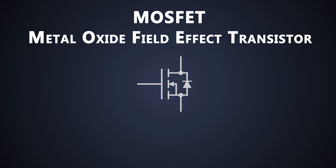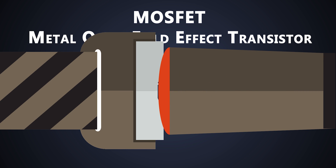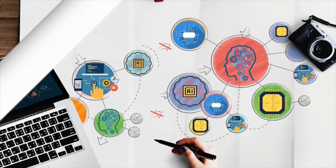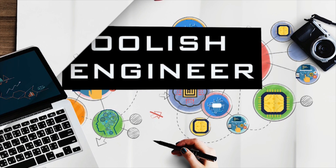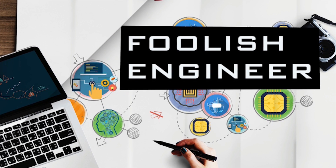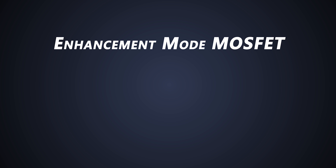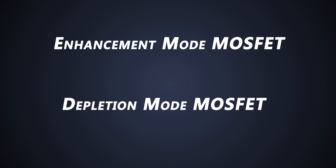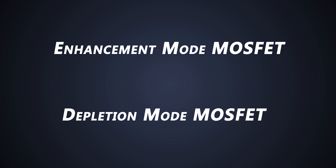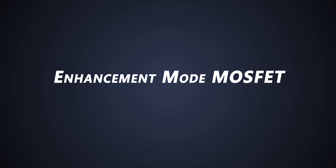This time we will look into the basics of MOSFETs and also see how it is different from BJT. There are two types of MOSFETs: Enhancement Mode MOSFETs and Depletion Mode MOSFETs. We mostly use Enhancement Mode MOSFETs in our design, and in our videos we will cover only Enhancement Mode MOSFETs.